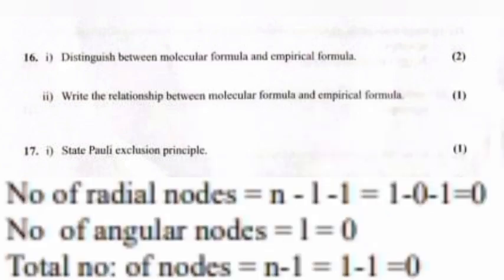2. 1s orbital [spherical shape]. 3. Number of radial nodes equal n-l-1 equal 1-0-1 equal 0. Number of angular nodes equal l equal 0. Total number of nodes n-1 equal 1-1 equal 0.